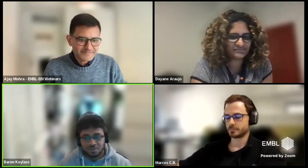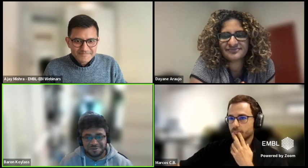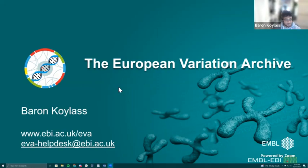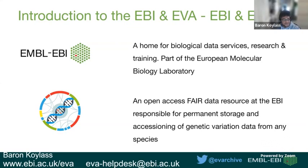I'm Baron Koilis, a bioinformatician at the European Variation Archive (EVA). The EVA is essentially an open access resource for genetic variation data from all species. The EBI is a home for biological data services, research, and training, part of the European Molecular Biology Laboratory. As the EVA, we act as a FAIR data resource — our main role is the permanent storage and accessioning of genetic variation data from any species. We assign globally unique and persistent queryable variant identifiers: SS and RS IDs you may have seen in publications.